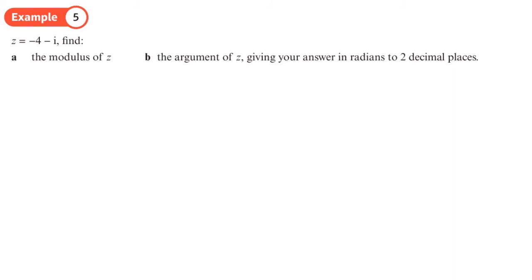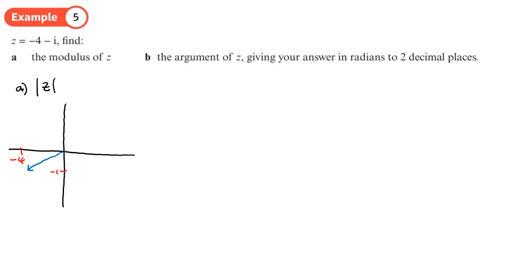For a different complex number, we again need a diagram. It's negative 4 across and minus 1 down, so the complex number is in the third quadrant. Drawing the right-angle triangle, the sides are 4 and 1, so the modulus equals √(4² + 1²) = √17.